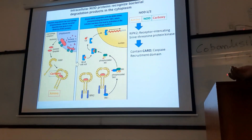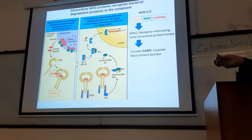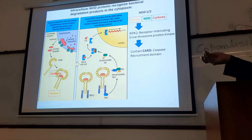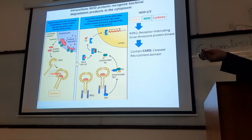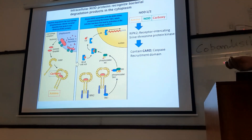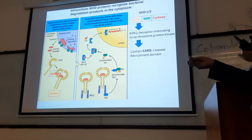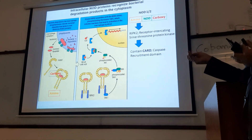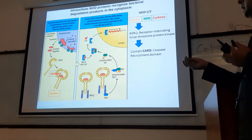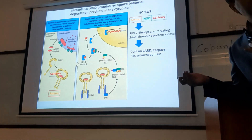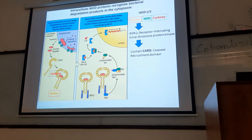Once IKK is phosphorylated, it dissociates IκB from NF-κB. NF-κB is now free to go inside the nucleus and start transcription of the genes responsible for causing inflammation.